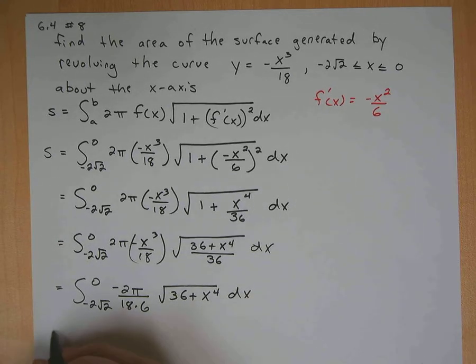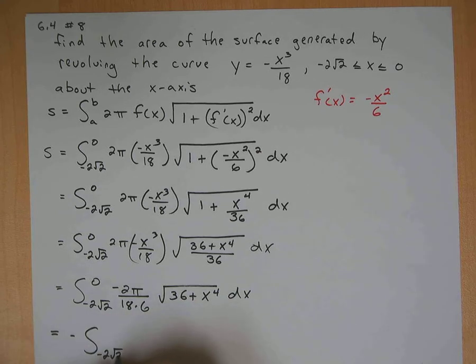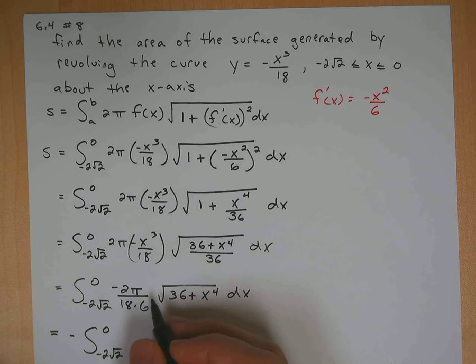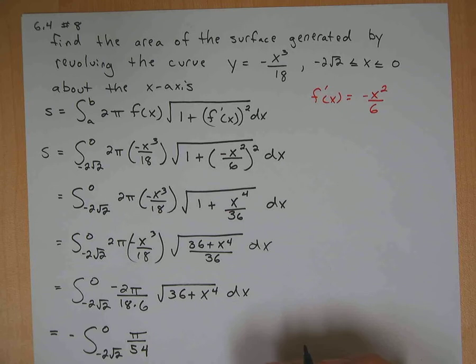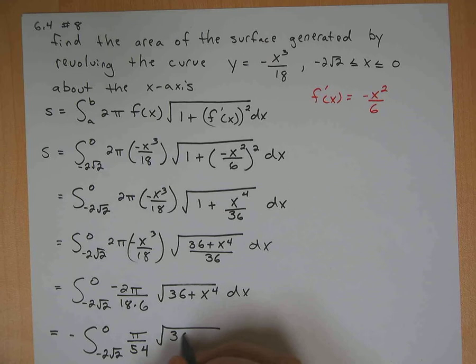Okay. Maybe one more step to clean that up. So let's put the negative out front. Negative 2 root 2 to 0. Let's see. 2, that would reduce to a 9. 9 times 6 being 54. So we get pi over 54. I believe that's correct. And then we have, again, square root of 36 plus x to the 4th dx.